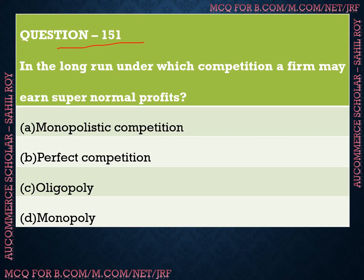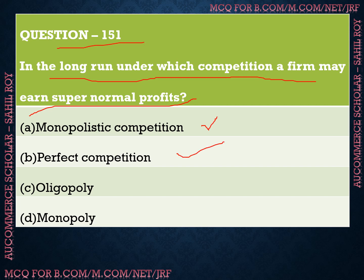Question number 151: In the long run, under which competition can a firm earn super normal profits? We have four options: Option A is monopolistic competition, Option B is perfect competition, Option C is oligopoly, and Option D is monopoly. The correct answer is Option D — monopoly. Monopoly is the type of competition where a firm can earn super normal profits in the long run.